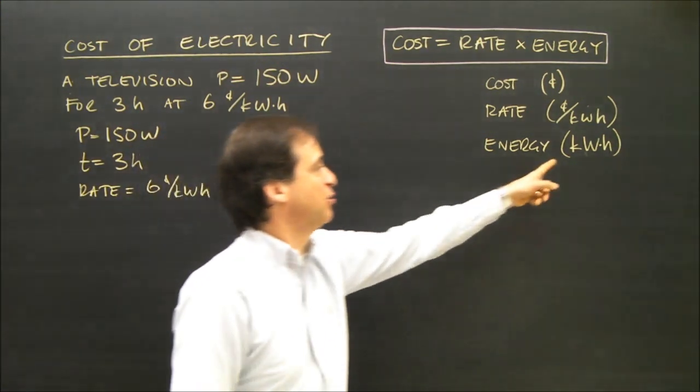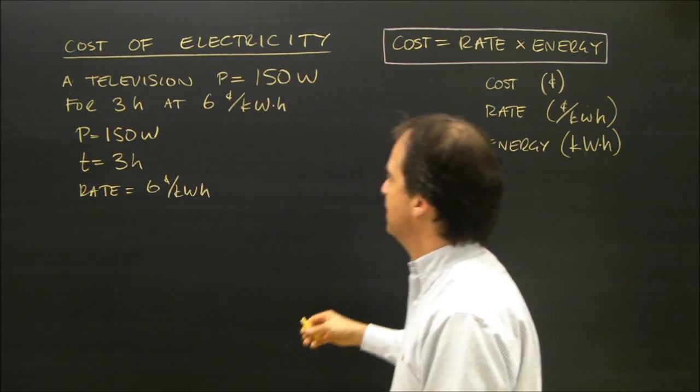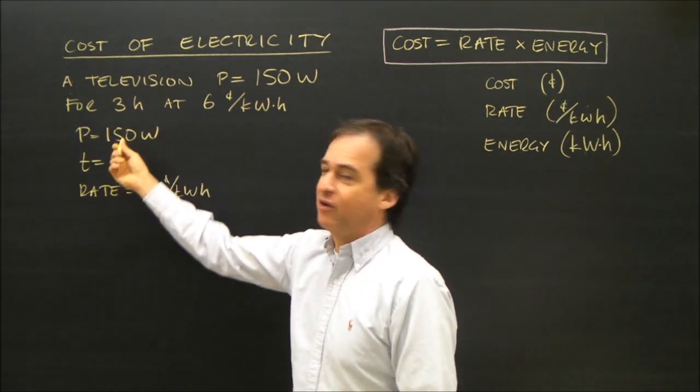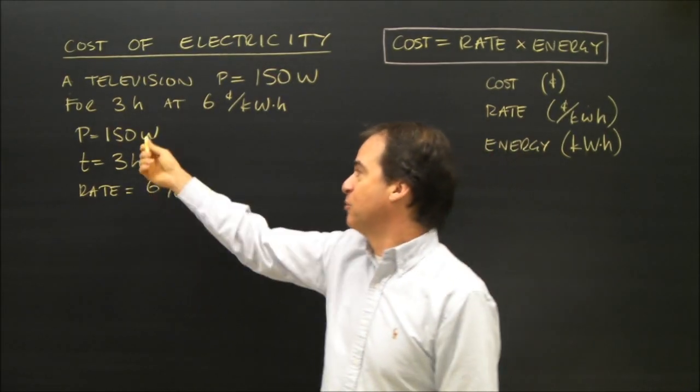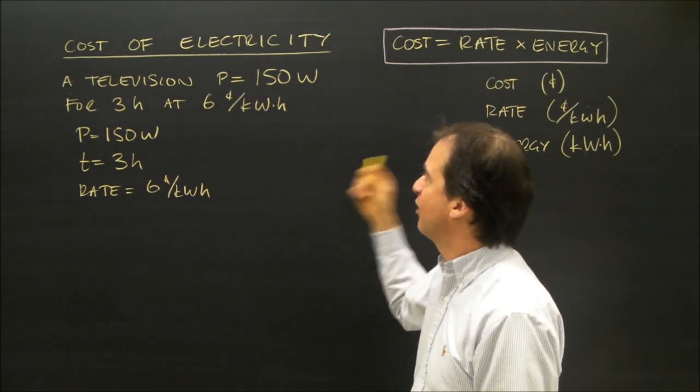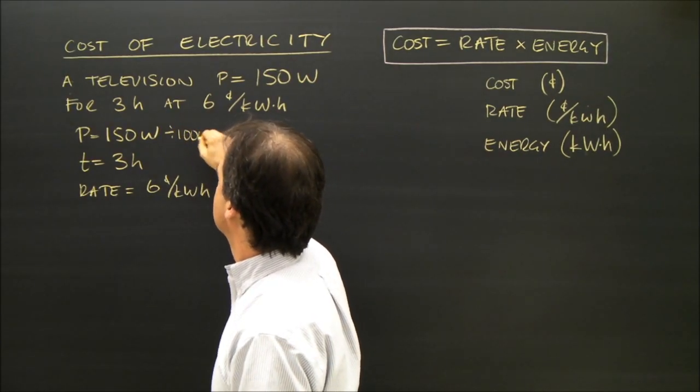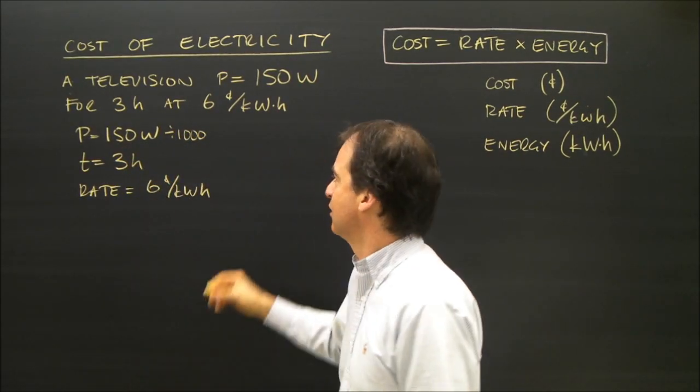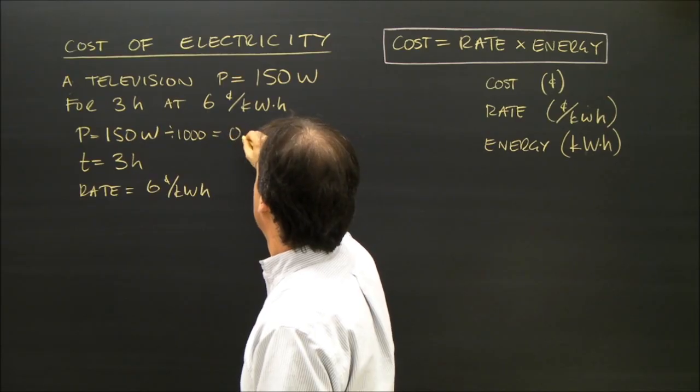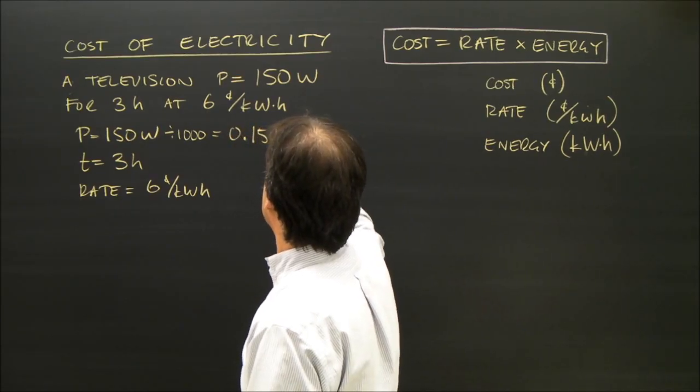Not kilowatts per hour, kilowatt hours. So the power, I've got to check my units. Normally that would be okay, but I can't use watts. I've got to use kilowatts. So I divide that by a thousand because watts divided by a thousand is kilowatts. That equals 0.15 kilowatts.